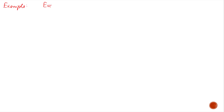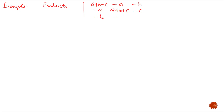Example 1: Evaluate using properties of determinants. The determinant of a matrix with elements (a+b+c), -a, -b in the first row; -a, (a+b+c), -c in the second row; and -b, -c, (a+b+c) in the third row. This is a determinant of a symmetric matrix where diagonal elements are equal.